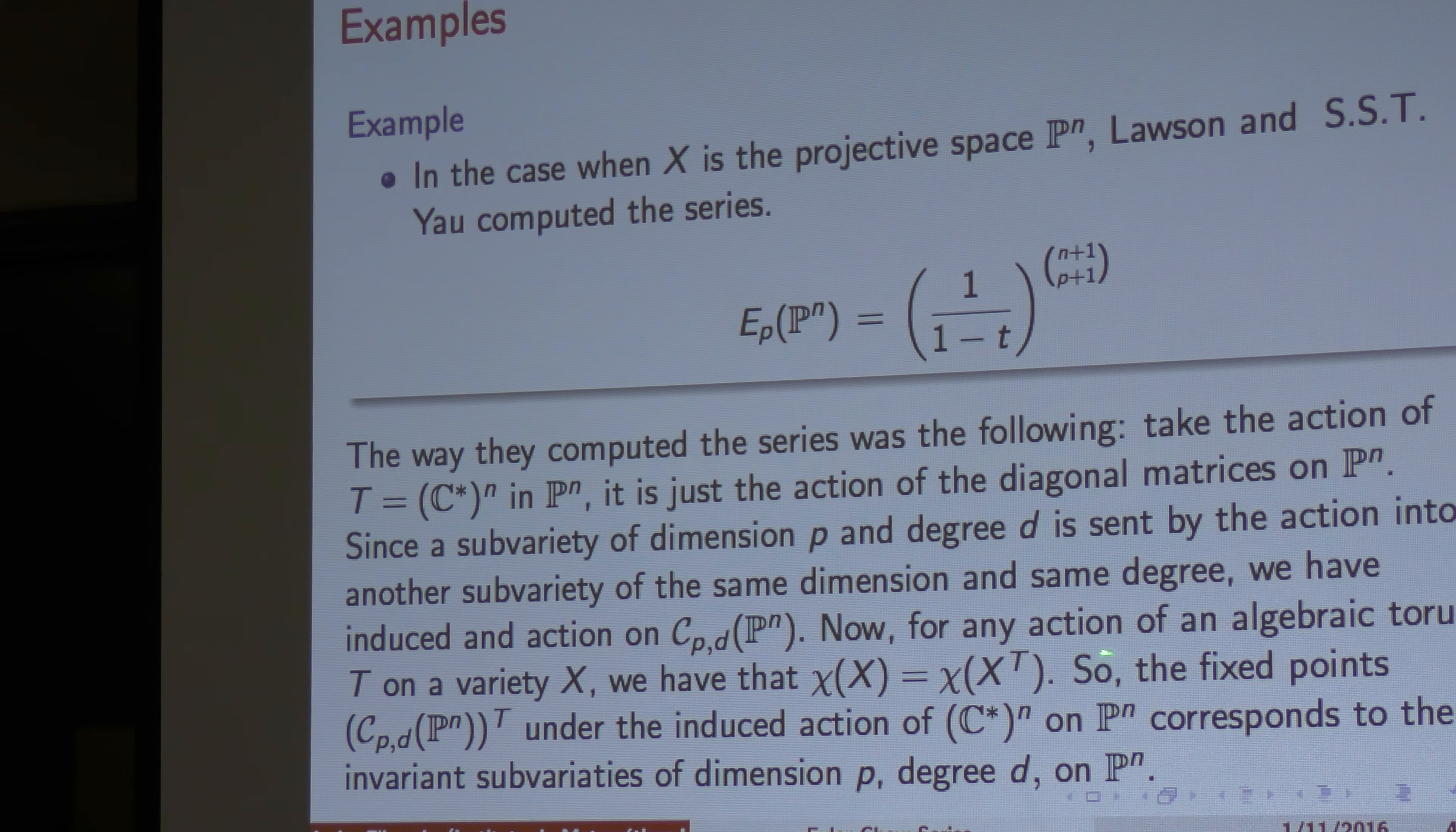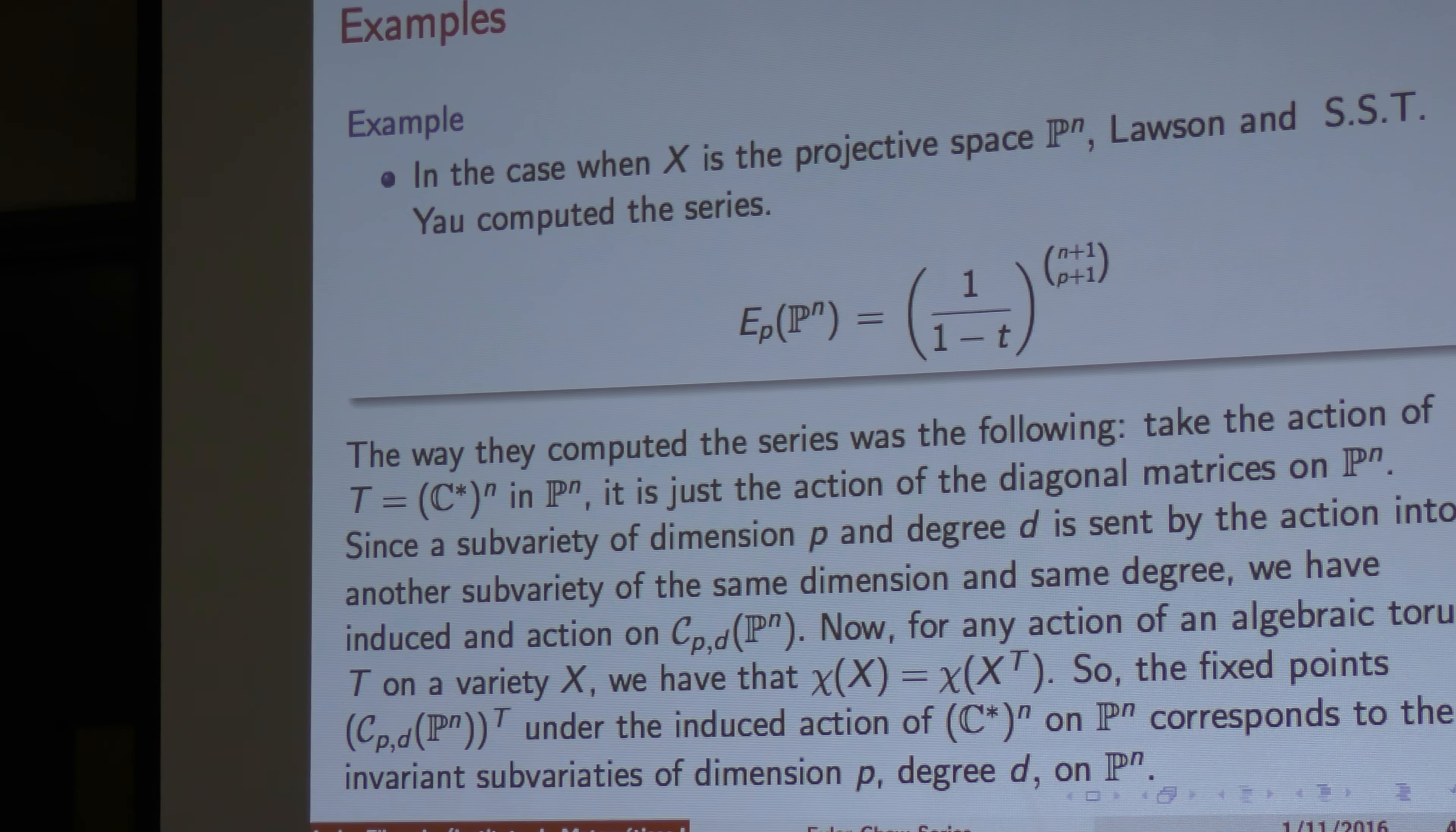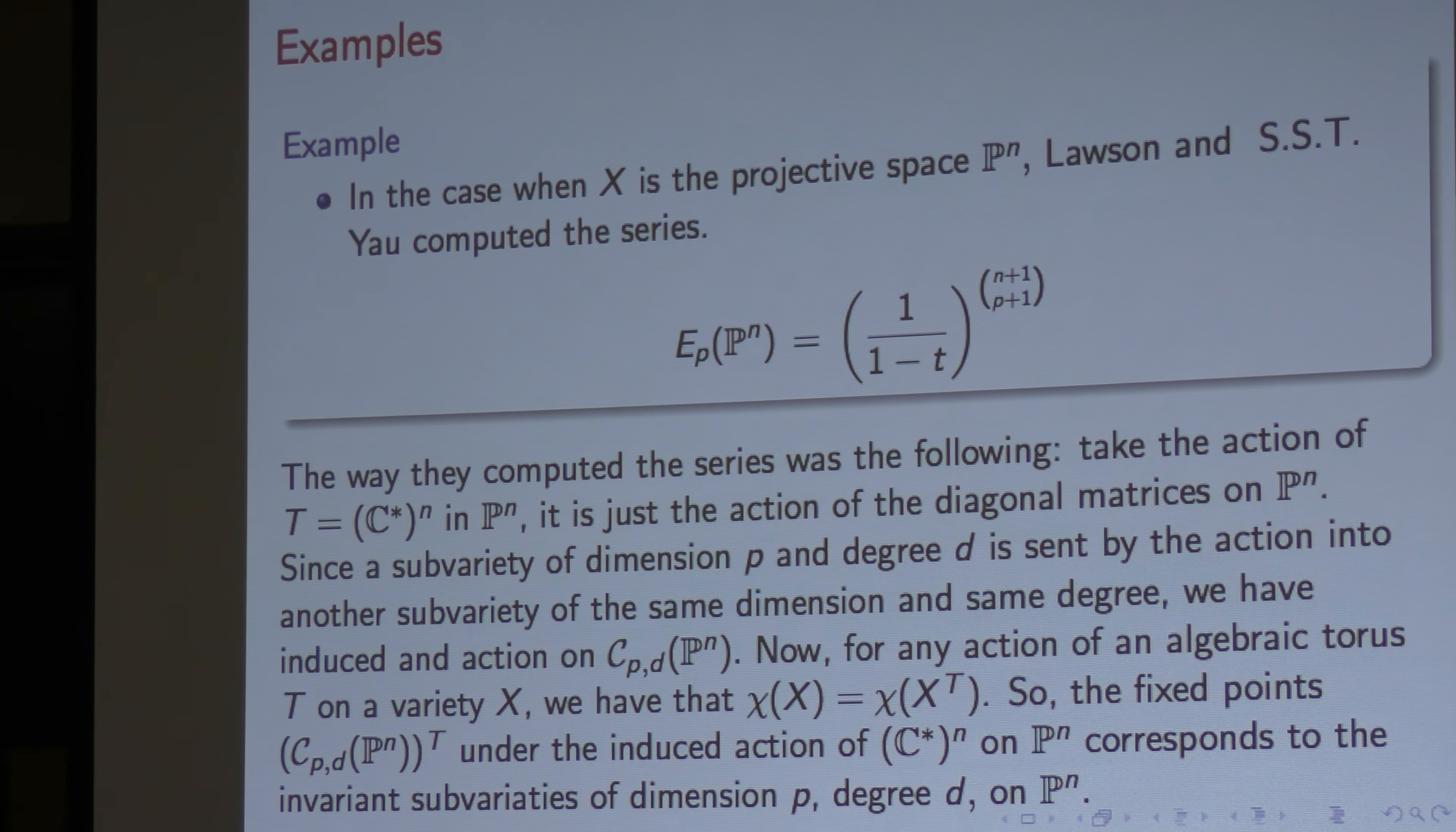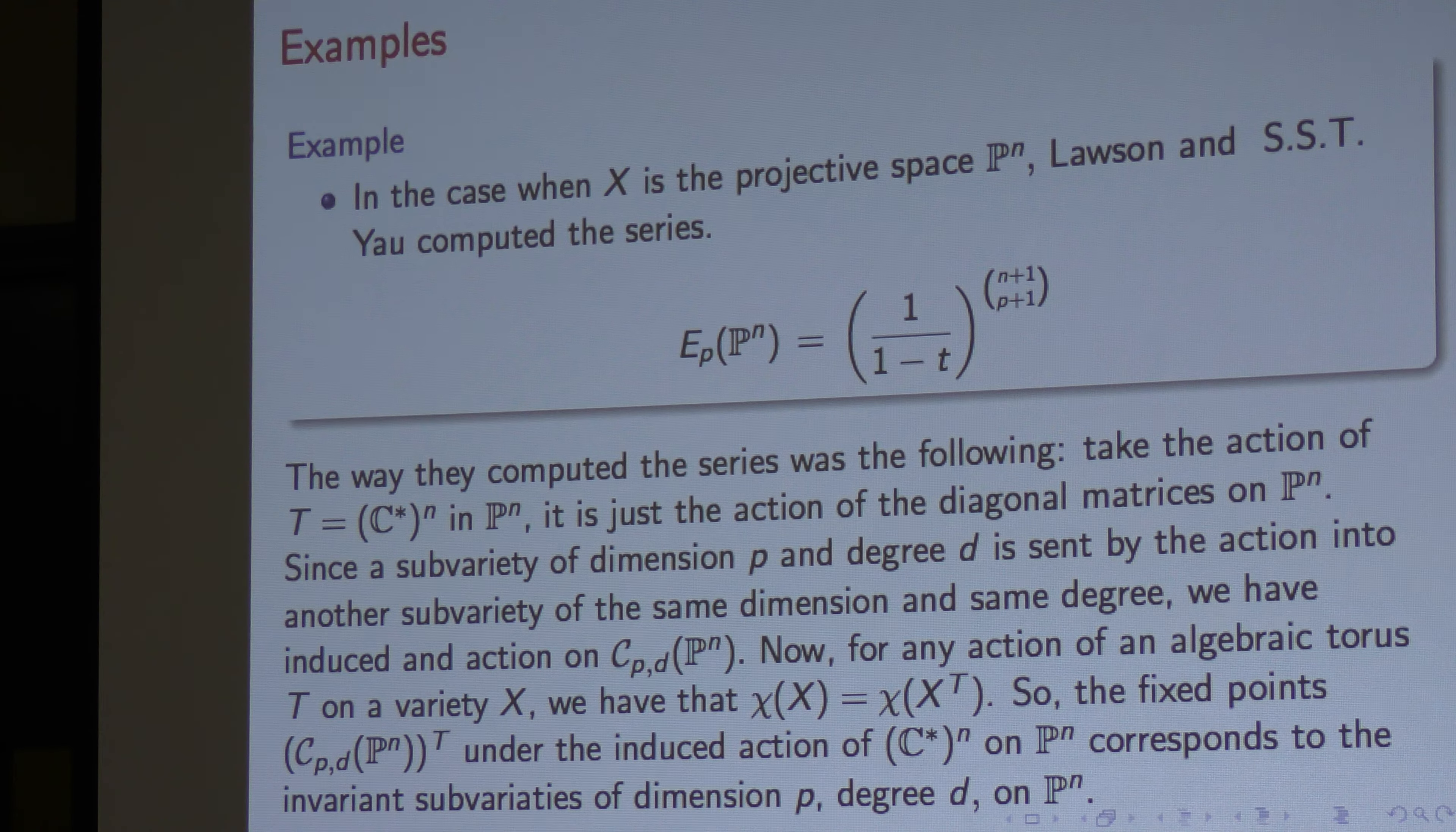So, there is this result, the Euler characteristic of X is equal to the Euler characteristic of T, which is the algebraic torus. And therefore, in CN, the action of the torus is just the only thing that are invariant are the K planes. So, you have finitely many, so you make the computation and you get the series. So, in this case, you are able to compute the Euler characteristic vector and then you compute the series. In general, that situation is not happening.